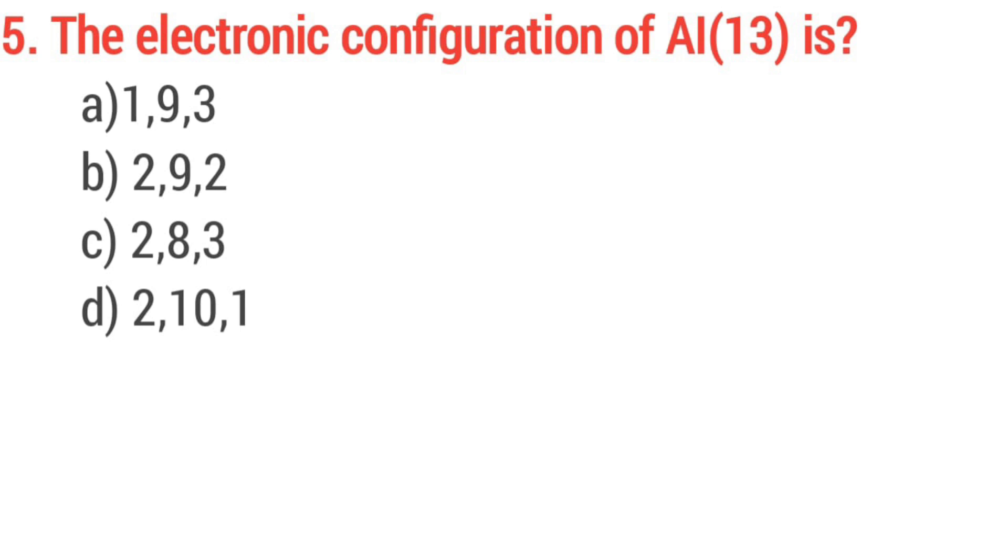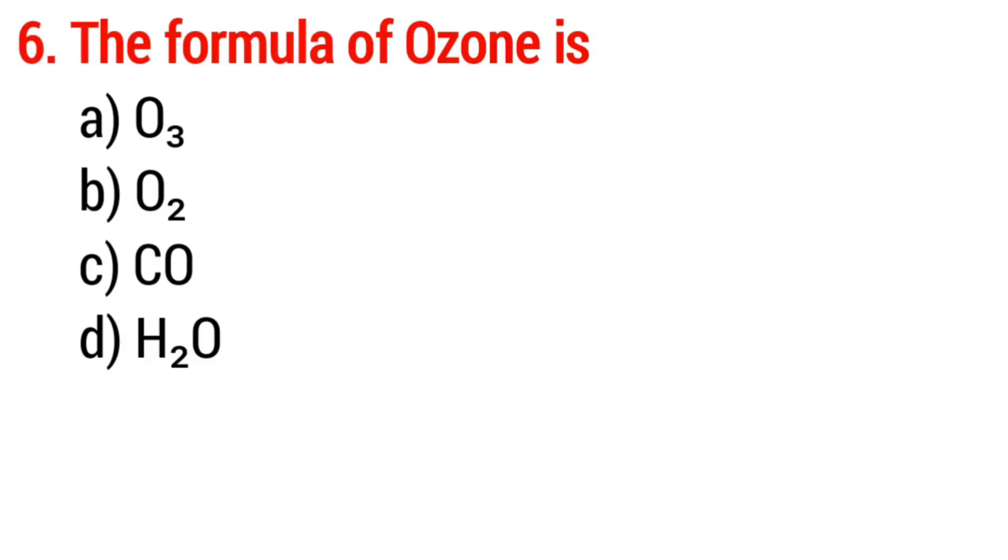Question number 5. The electronic configuration of aluminum is? Option C, 283. Question number 6. The formula of ozone is? Option A, O3.